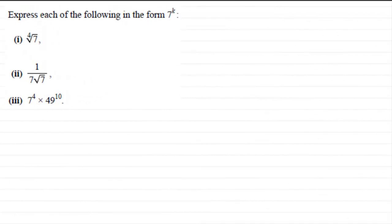Hi. In this example we've got to express each of the following in the form 7 to the power k. We've got in the first one the fourth root of 7, then we've got 1 divided by 7 root 7, and in the third one 7 to the power 4 times 49 to the power 10.